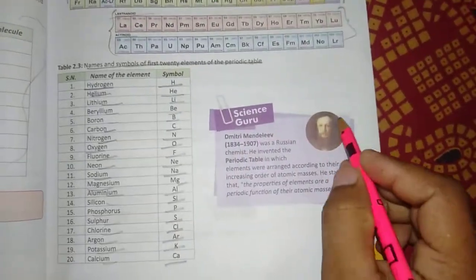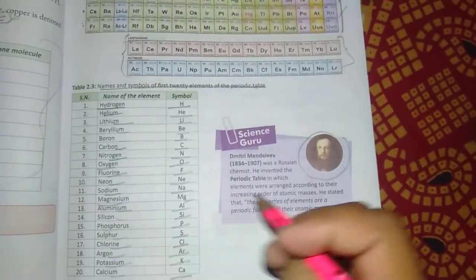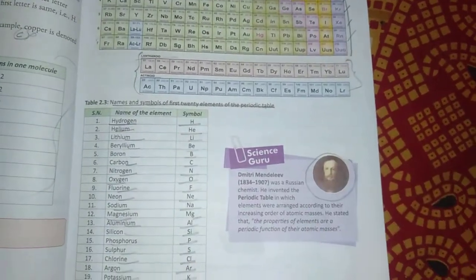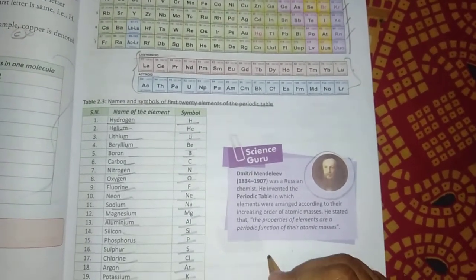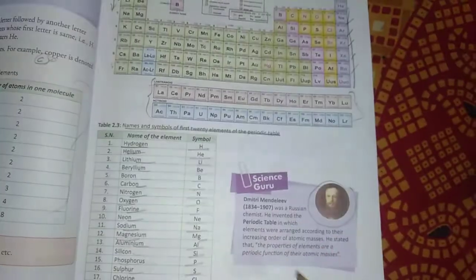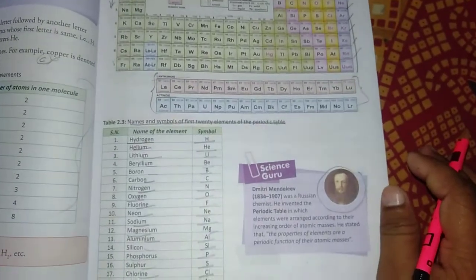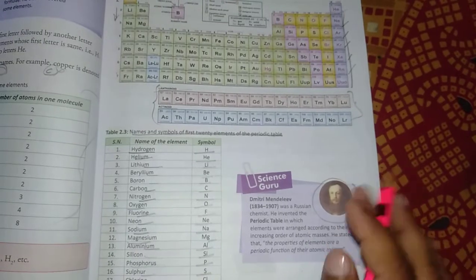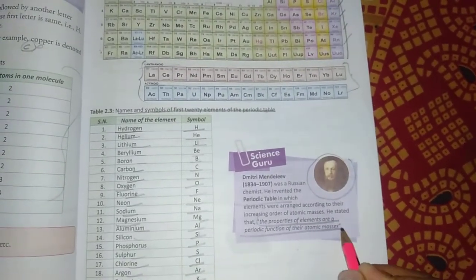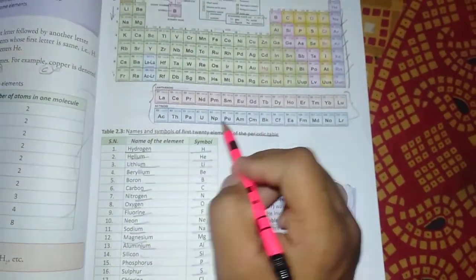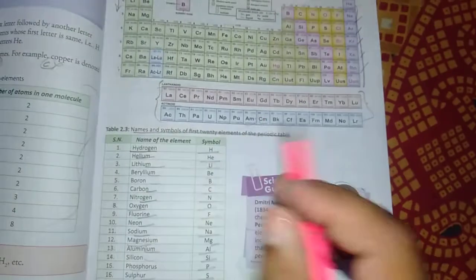A scientist is given here whose name is Dmitri Mendeleev. He is the scientist who gave us the modern periodic table. He arranged elements by atomic mass. Then Moseley told us about atomic number, which we follow today. We will study this later.